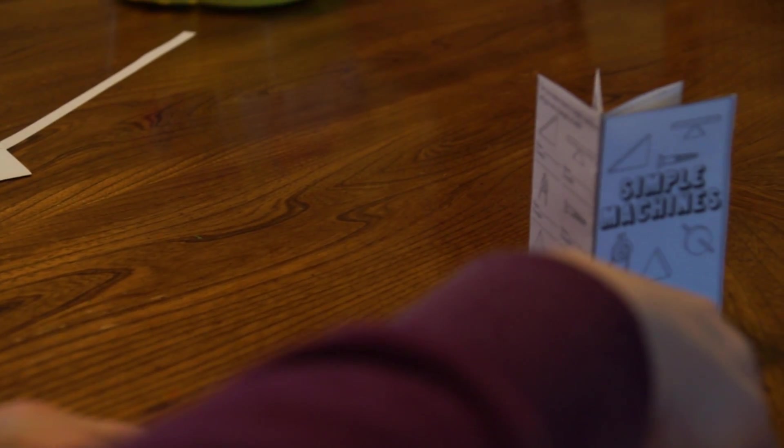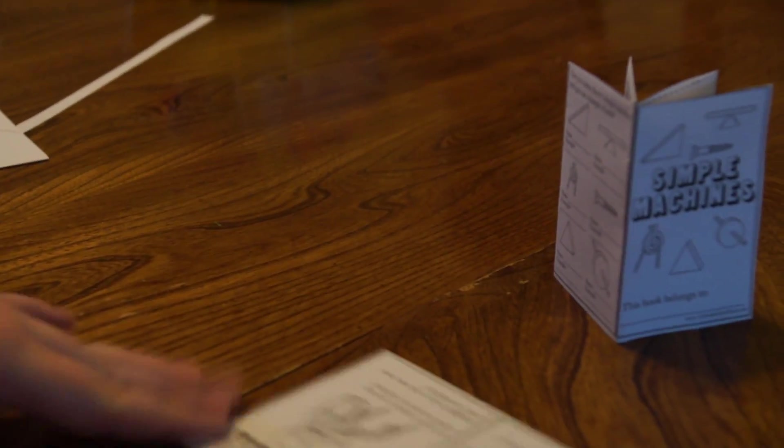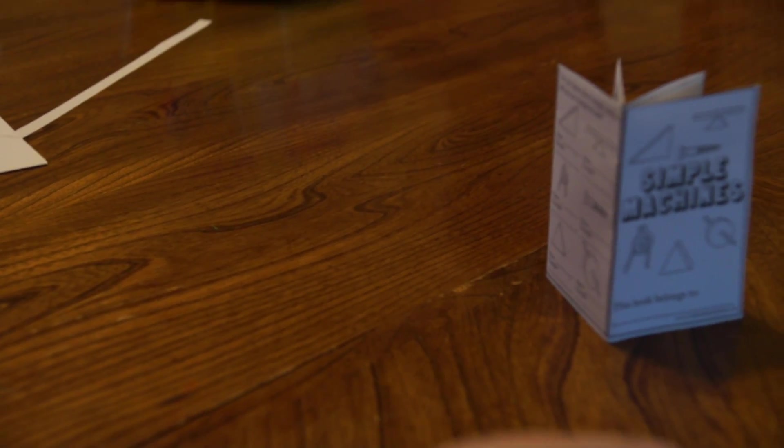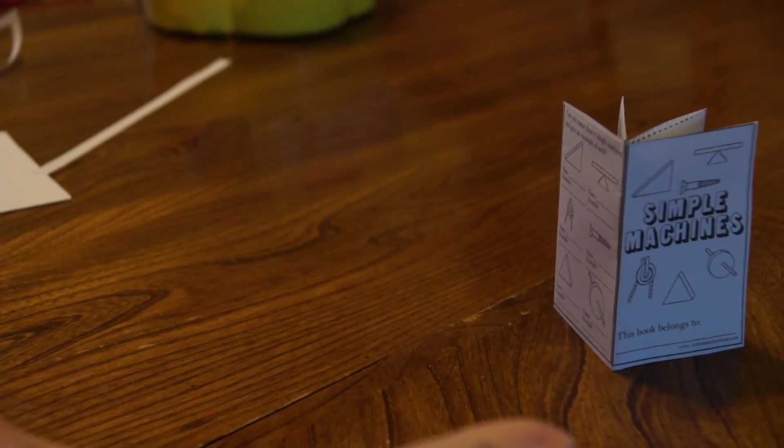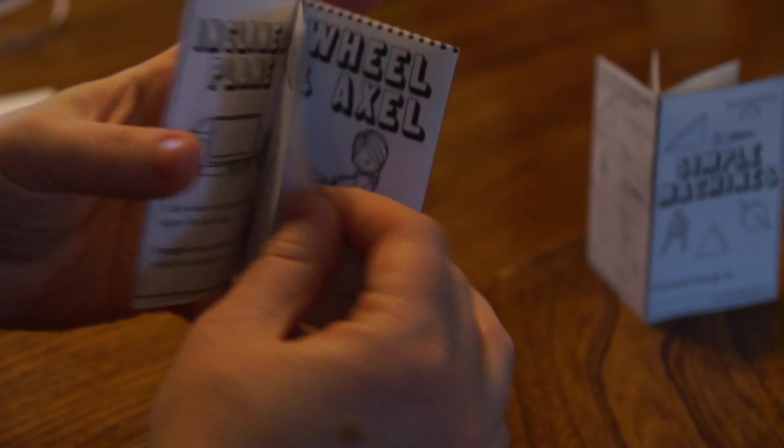So I start out by folding it in half. Then you're going to fold it in half again, and half again. So now it looks like this, but it's not a book yet.